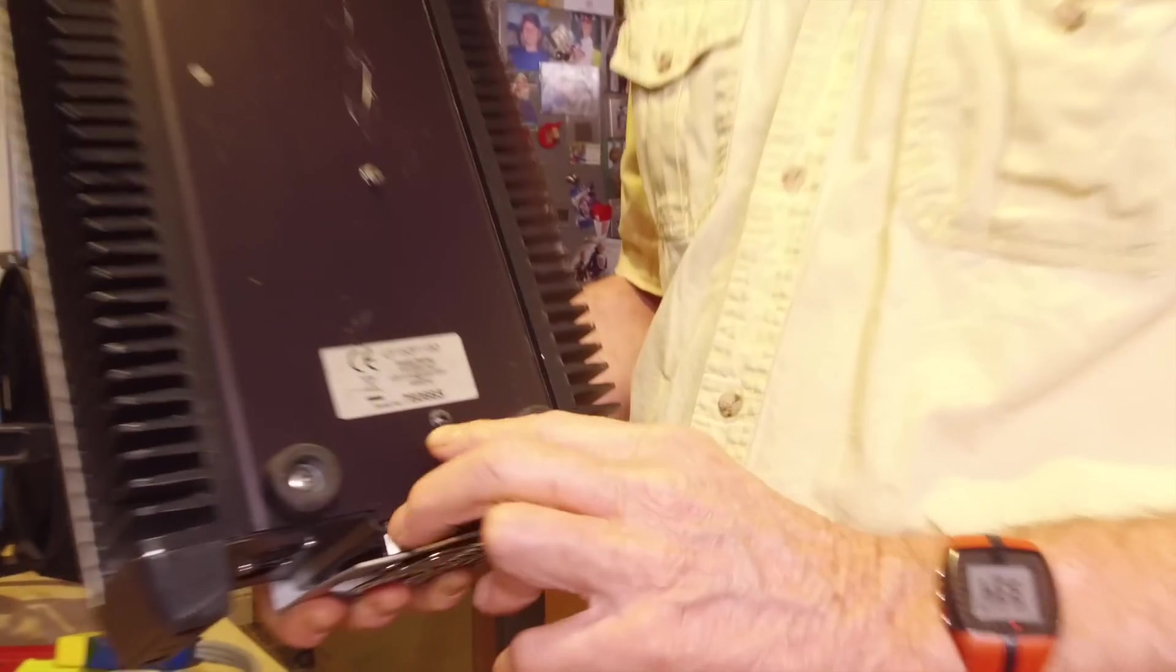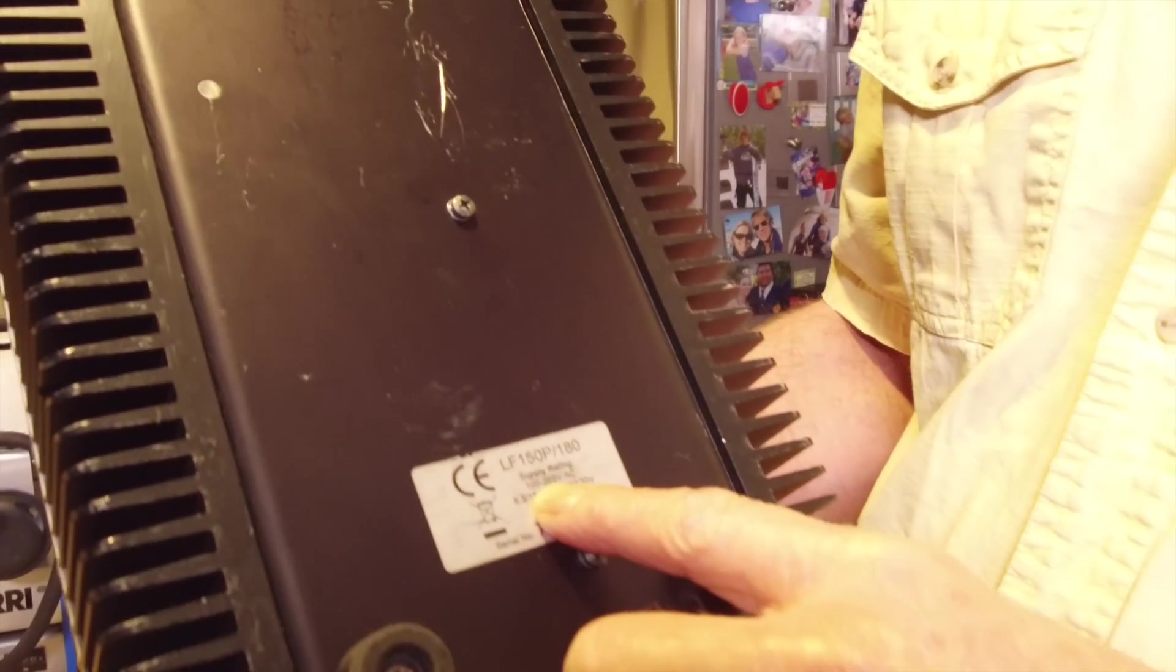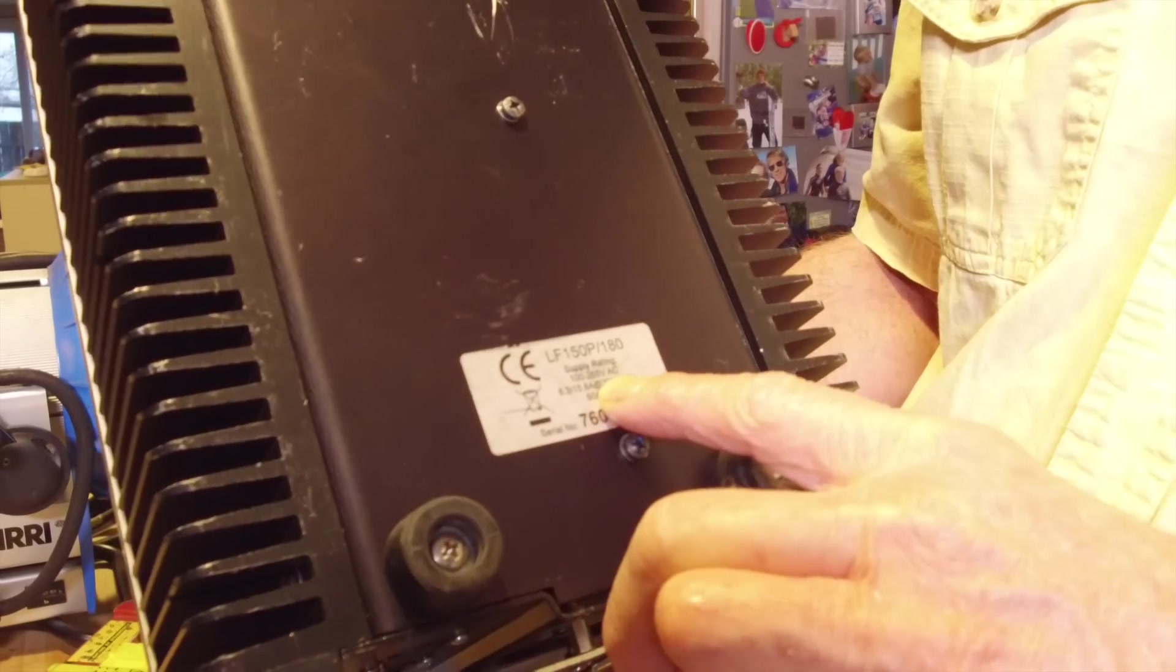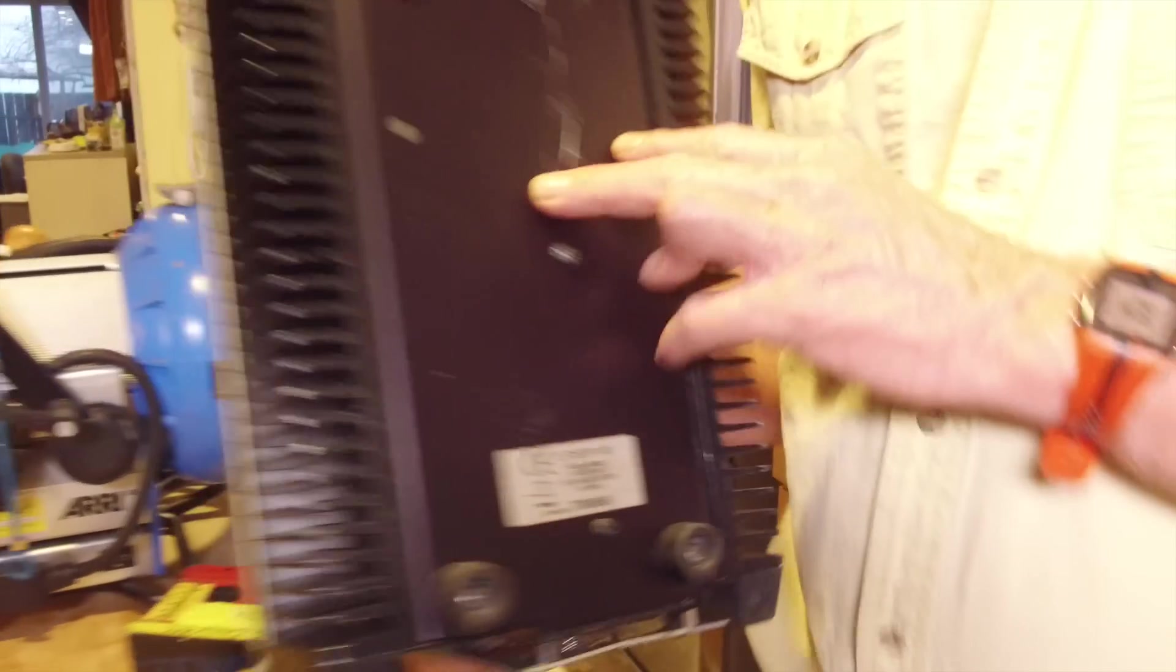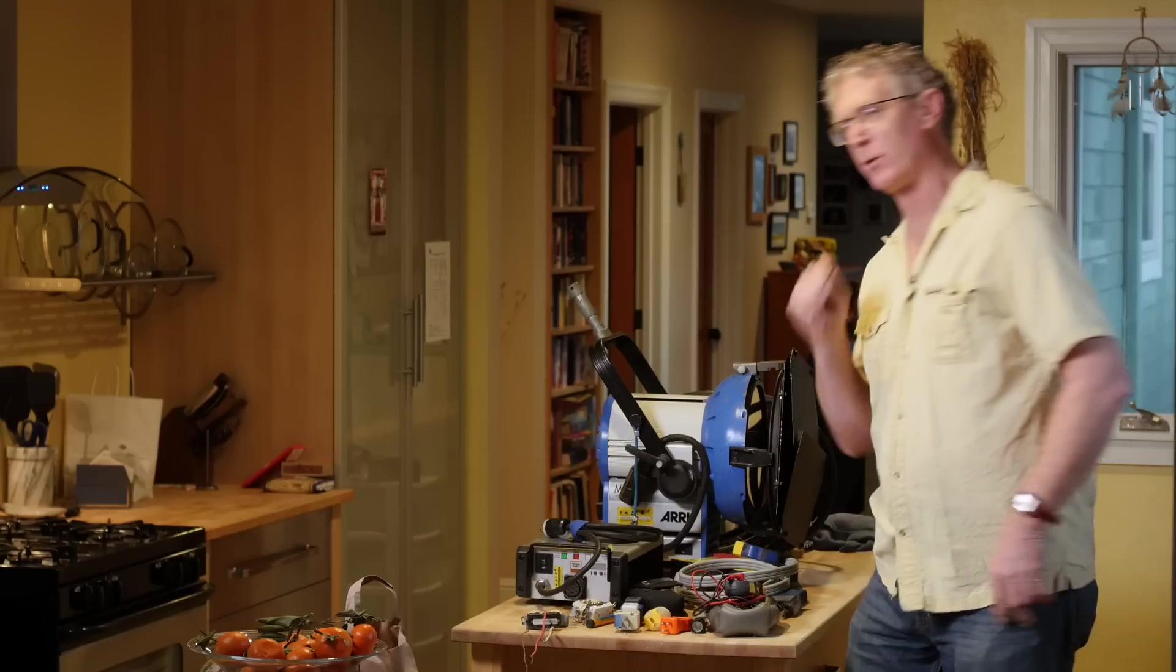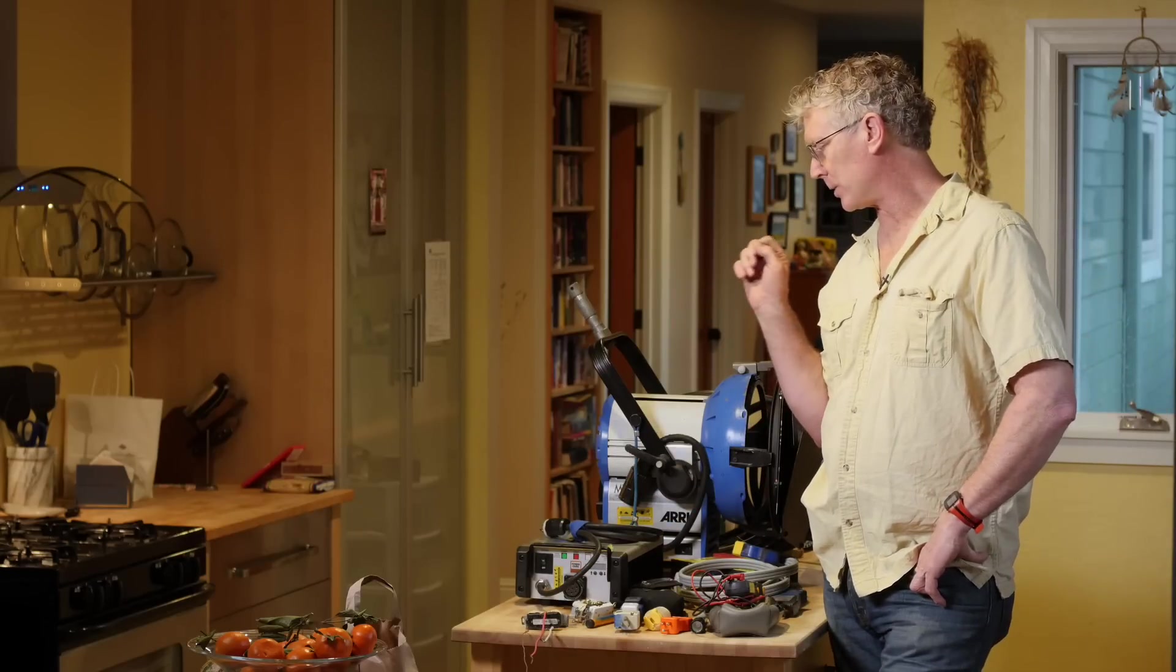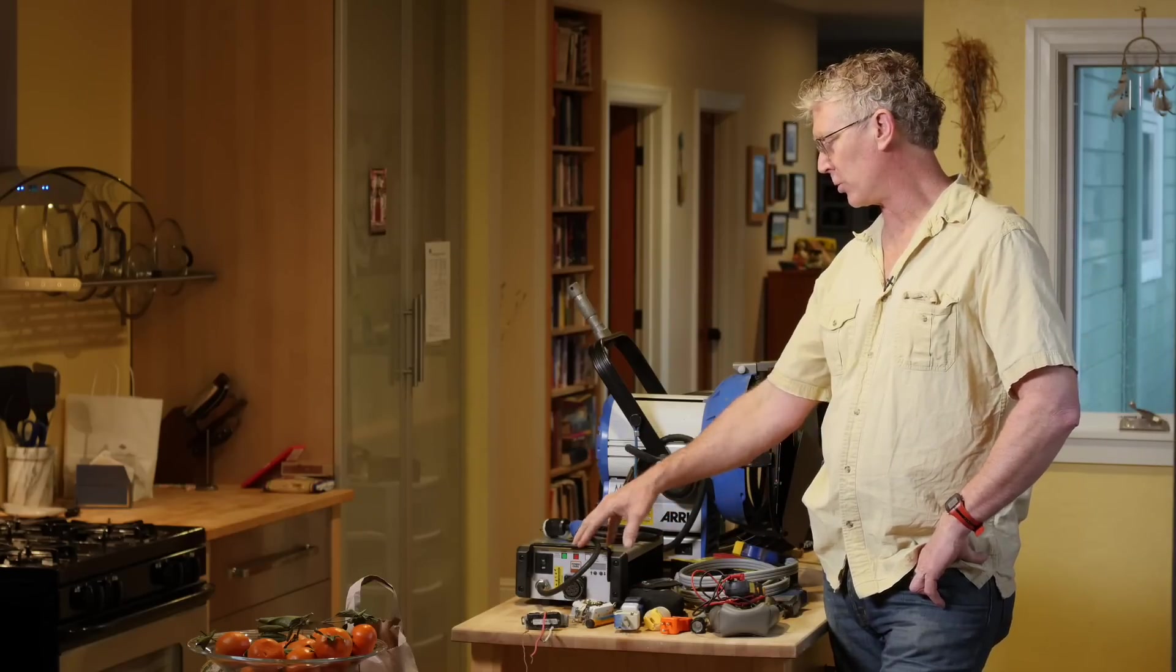This is the Power Gems ballast for the Arri. And if you take a look here, it says 100 to 265 volts AC. On the Joker ballast, a lot of those will have a switch. You need to switch over to 220. The really old ones on the Jokers don't do 220, I think.